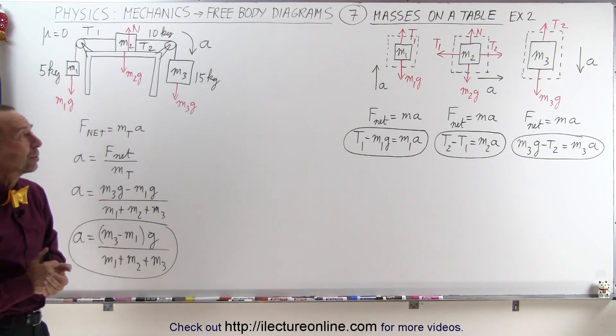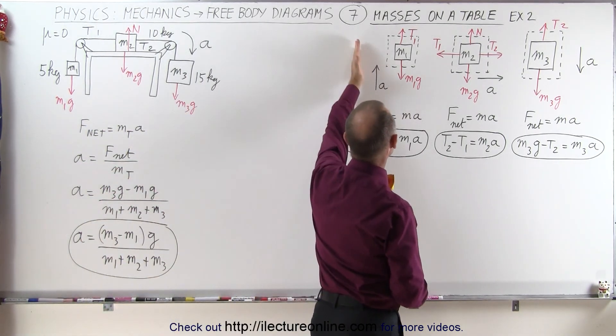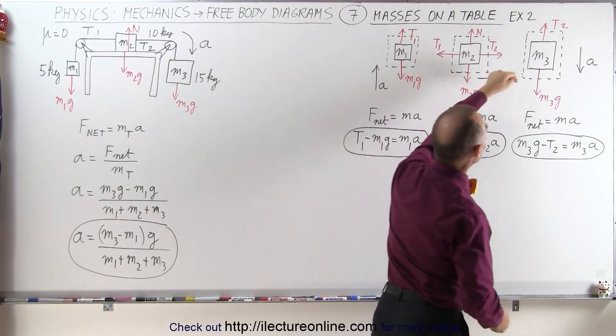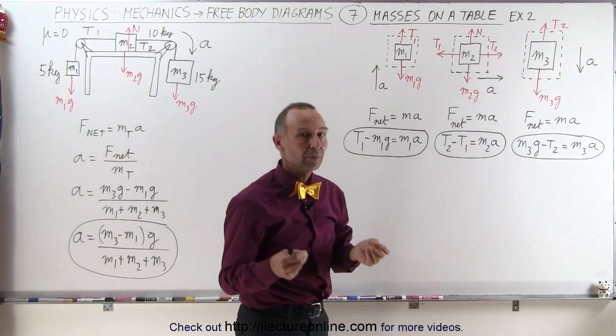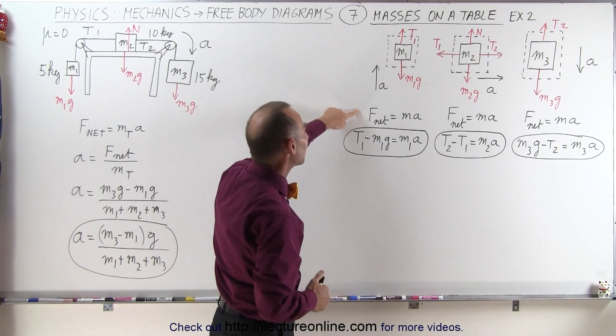But now let's use free body diagrams. When we do that we recognize that for the first mass the acceleration is upward, for the second mass the acceleration is to the right, for the third mass the acceleration is downward. So for each block, for each free body diagram, we set up an equation F equals ma.